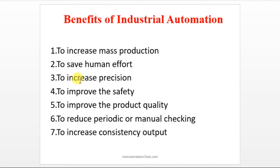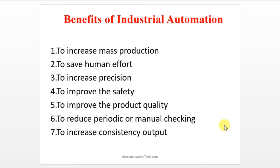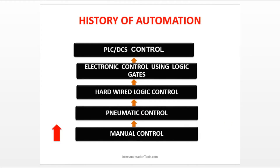The benefits of industrial automation include: increasing precision, improving product quality, and reducing periodic and manual checking. This is very important because if you put a human operator, there will be human error, but a machine reduces that error. Industrial automation also increases consistency in output. These are the basic benefits of industrial automation.